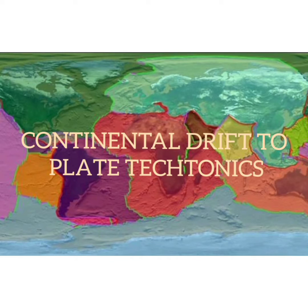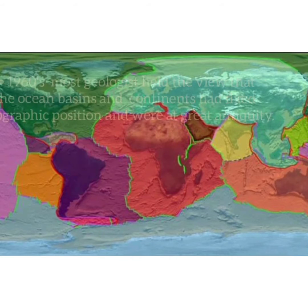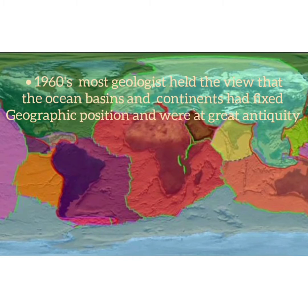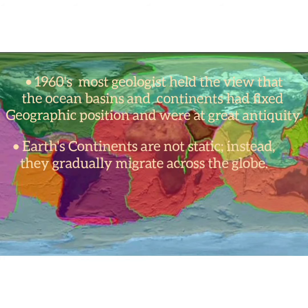In the 1960s, most geologists held the view that the ocean basins and continents had fixed geographic positions and were of great antiquity. Less than a decade later, researchers came to realize that Earth's continents are not static — instead, they gradually migrate across the globe.